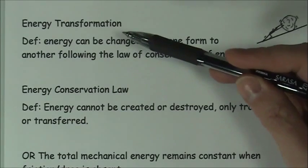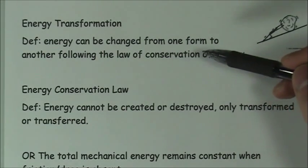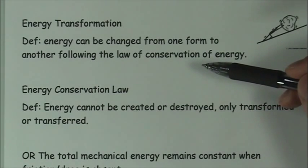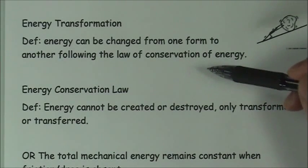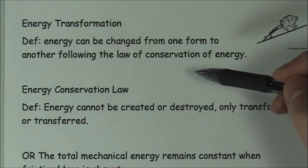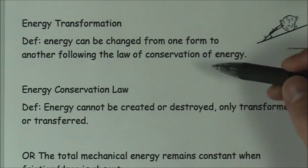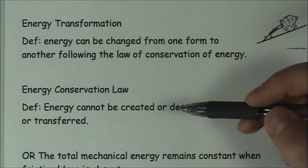The definition of energy transformation is that energy can be changed from one form to another following this idea of the law of conservation of energy. So for example from kinetic to potential or potential to kinetic and into other forms also. Potential energy could be transformed into kinetic but also could be turned into heat or to sound or to light following the law of conservation of energy.